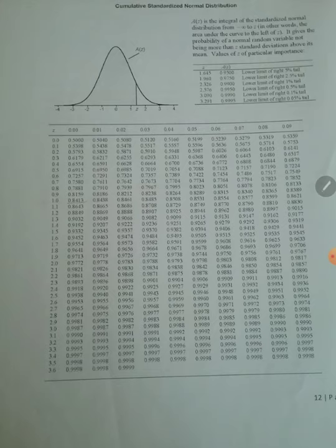When you go to the table, you have a column for Z and also a row for Z. You begin with the column where you have 0.0, 0.1, 0.2, 0.3, and it goes up to 3.6. To find P(Z < 0.00), you come to the row of 0.0 and match with the column 0.00.